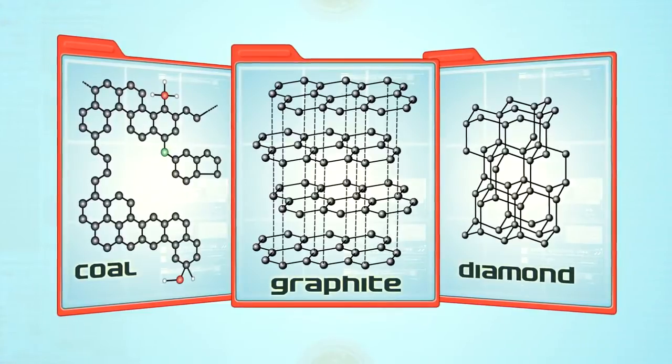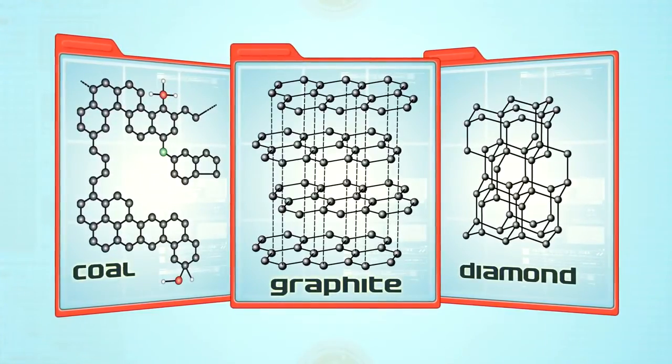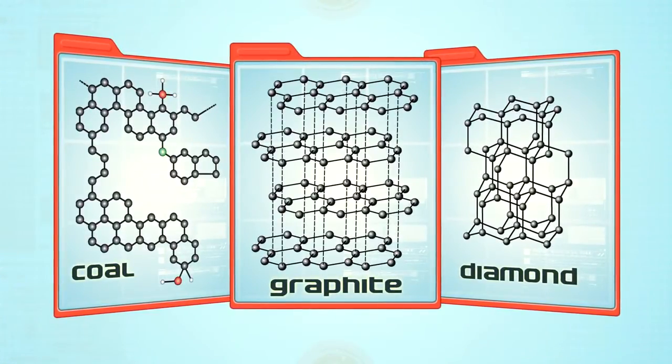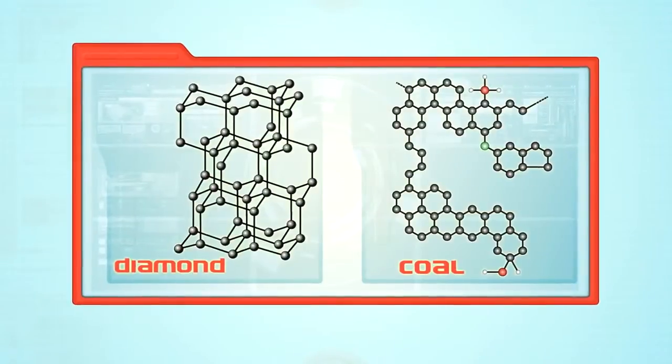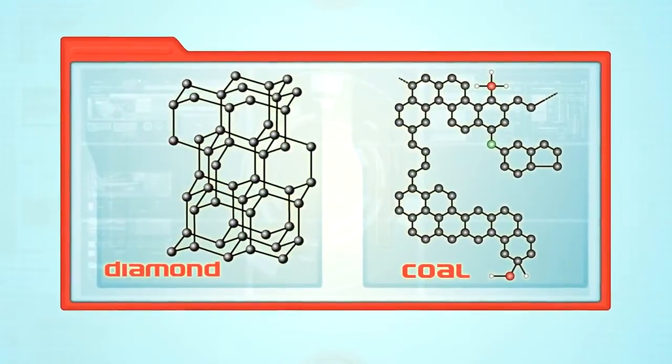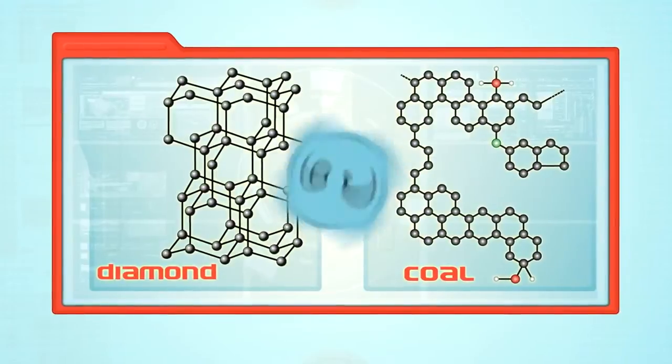The way atoms are connected to each other in solid materials has a huge impact on their overall properties. A diamond and a piece of coal are so different that you would never guess that they're both made out of the same element, carbon.